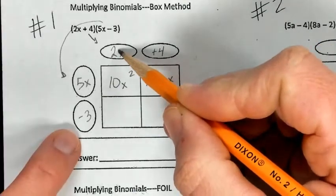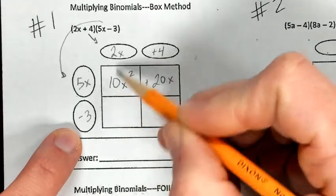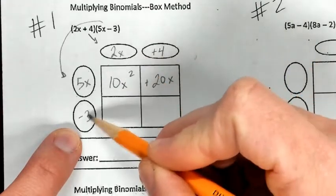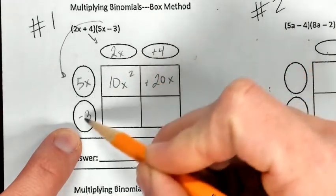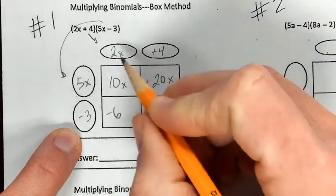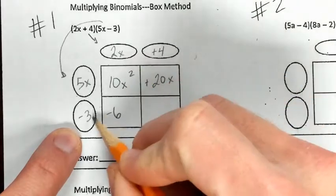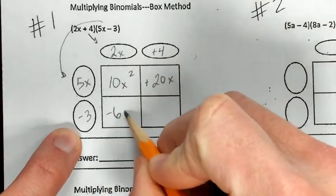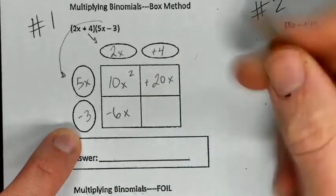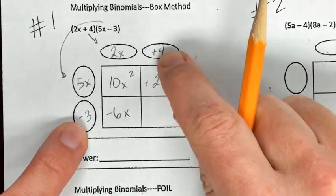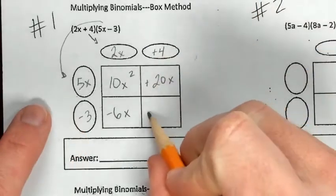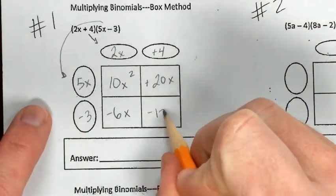Same thing — I'm multiplying 2x times a negative 3. I multiply coefficients: negative 3 times a positive 2 is going to give me a negative 6. I've got an x here, no more x's, so I get x to the first power. And then last but not least, I've got my numbers: negative 3 times 4, that gives me a negative 12.